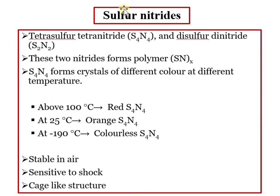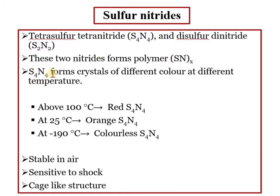For sulfur nitrides among the molecular nitrides, there are two main examples: tetra sulfur tetra nitride (S₄N₄) and disulfur dinitride (S₂N₂). These can also form a polymer known as polythiazyl.